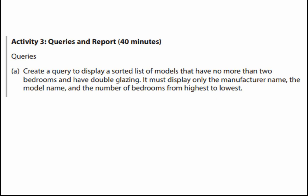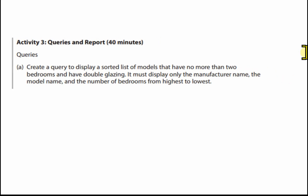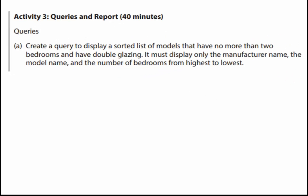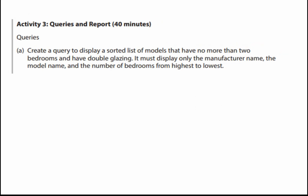There are always two queries in Activity 3. The first one, Query A, is usually quite straightforward and everybody should be able to achieve this. We've got to create a query to display a sorted list of models that have no more than two bedrooms and have double glazing. It must display only the manufacturer name, the model name, and the number of bedrooms from highest to lowest.